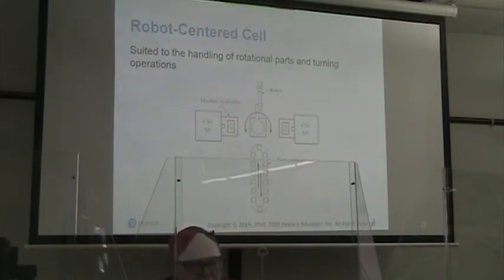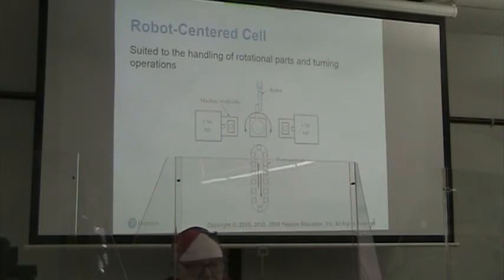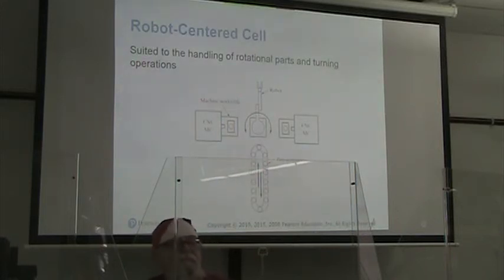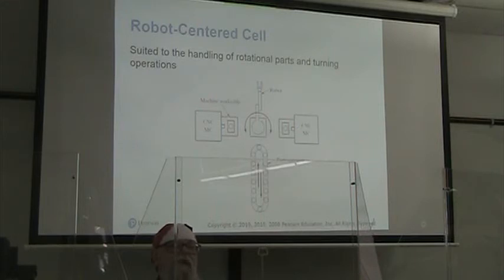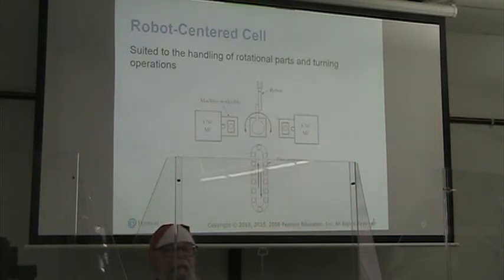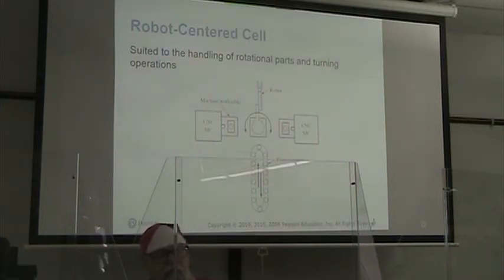We're going to call this a robot-centered cell. It is suited to the handling of rotational parts and turning operations. We have two CNC machine centers, a parts carousel, and a robot. Our parts can be moved by the robot from the carousel to one of the machines, from one machine to the other, and back to the carousel.